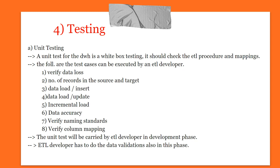The ETL developer verifies data loss — whether data is coming correctly, and whether source row count and target row count match. They also check for rejected rows in the session log. Second, the number of records in source and target must match. Third, data load or insert — whether insertion is going correctly. Fourth, data load and update — checking whether data is updating properly. Fifth, incremental load — the daily process to load to target, and calculating averages. For example, with ICICI bank, if 10 million transactions happen daily, the average in the report shows 10 million.